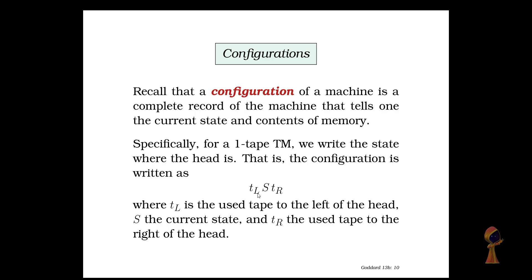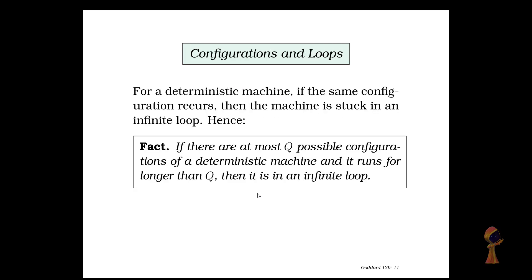Let's talk about the concept of configurations. Configuration tells the complete record of the machine. It says this is the current state, this is the content of the memory. If we have got one tape Turing machine, we write the state such that the tape on the left side is on the left and then S is the state and tape on the right is written on the right. Remember TL is the used tape to the left. If we talk about configurations, remember there is a possibility of a loop.